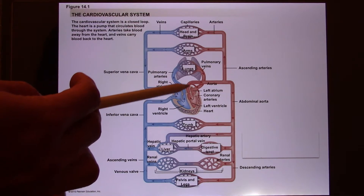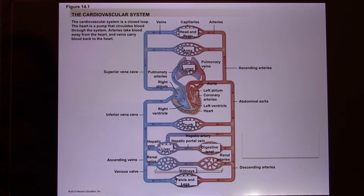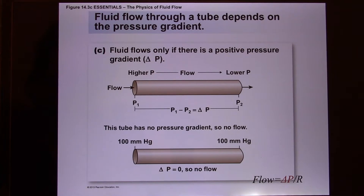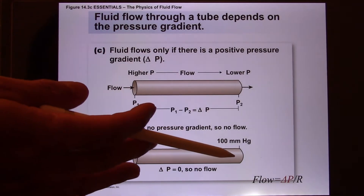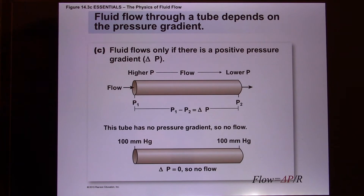The left ventricle needs to send blood to the brain, to the toe, and back. A lot of concepts in blood pressure were covered in previous chapters on the mechanical events of the heart. To have blood flow, you need to create a pressure gradient — no pressure gradient, no flow. A bigger pressure gradient means bigger flow. That's the driving force: the pressure gradient.